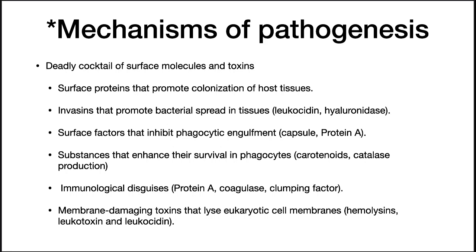Surface factors inhibit phagocytic engulfment. For example, capsules will shield surface structures to which phagocytes can bind. Also, protein A binds the conserved structures of antibodies, thus causing them to attach in reverse orientation and preventing phagocytes from using antibodies as an opsonin. They also prevent the signaling of other immune responses by binding IgG in reverse order. S. aureus produces substances that enhance their survival in phagocytes.